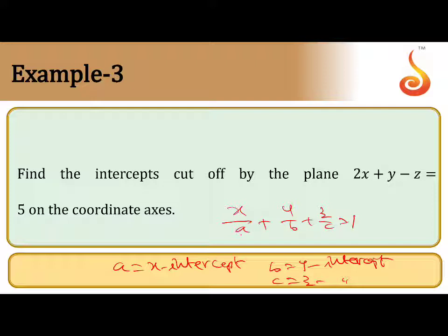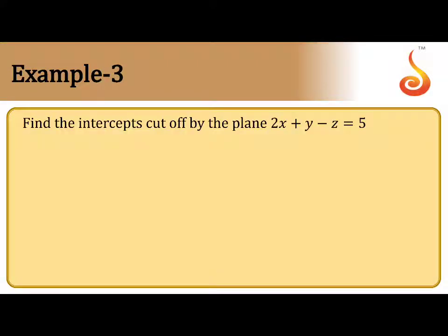Here a is the x-intercept, b is the y-intercept, and c is the z-intercept. Bring the equation into the form x/a + y/b + z/c = 1, so that you can get the intercepts.